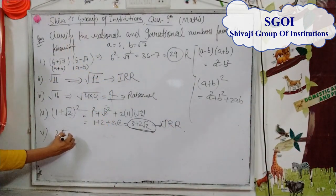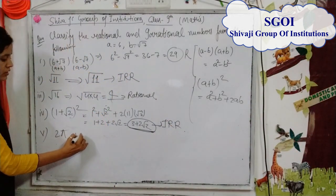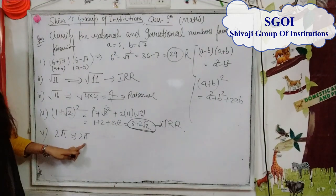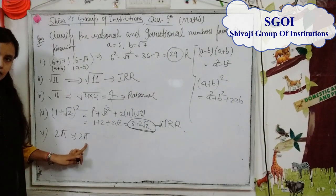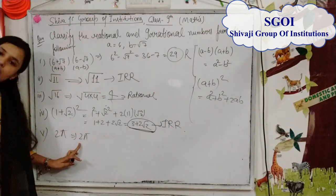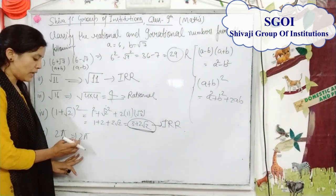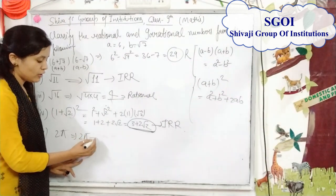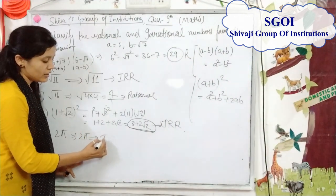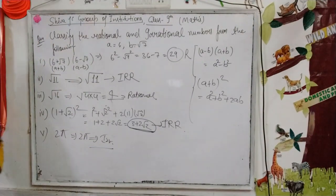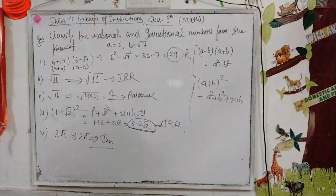The next is 2 pi. We know that pi is an irrational number and 2 is rational, but when we multiply a rational number by an irrational number, we get an irrational number. Therefore, 2 pi is an irrational number.